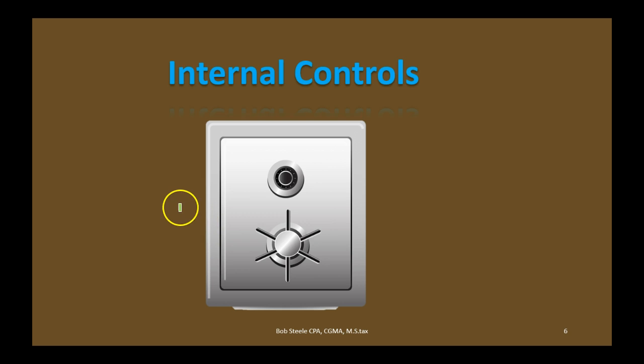Part of that has to do with internal controls. Internal controls can have to do with safeguarding assets — meaning we're obviously not going to put the money in a shoebox in the middle of the lunchroom. We might put it in the bank. Controls can help catch things earlier, catch fraud earlier, and create an environment that is less likely to have fraud through good communication. To catch fraud, we could have bank reconciliations, different types of systems, separation of duties — different people in charge of different things — which could allow us to detect when money is stolen or inventory goes missing.